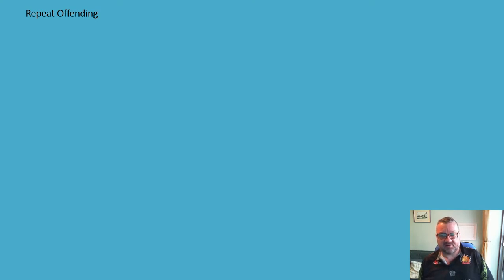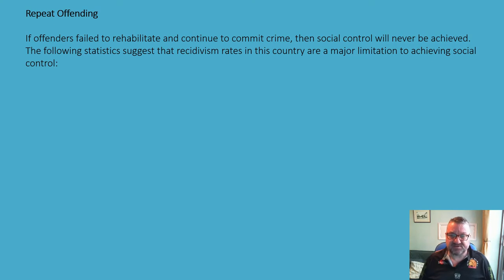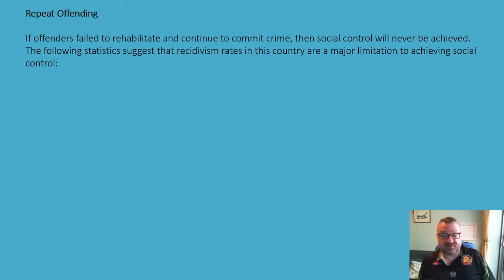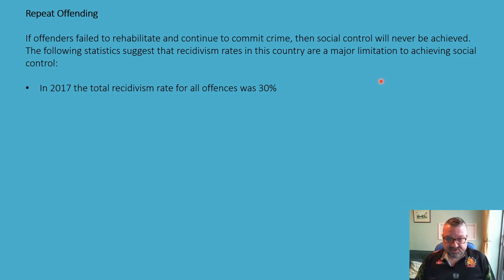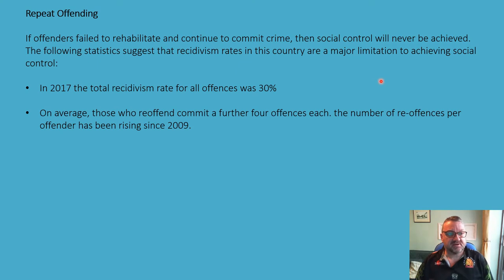So we are examining the limitations to agencies, and I'm going to start with repeat offending as a limitation to agencies in achieving social control. If offenders fail to rehabilitate and continue to commit crime, then you can't achieve social control. These stats suggest that the recidivism rates in the UK are a major limitation. In 2017, the total recidivism rate for all offences was 30%.